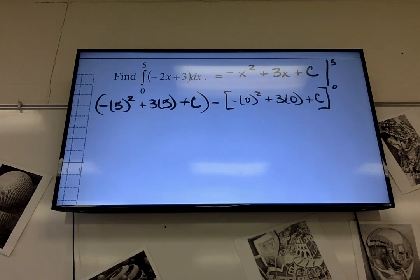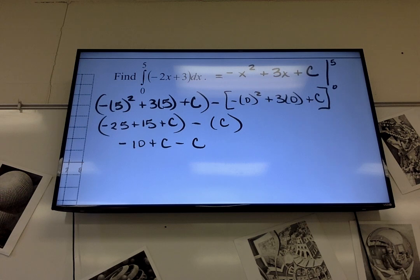So 5 squared is 25, so negative 25 plus 15 plus C, minus, yeah, 0 plus 0 plus C, so C. Are you cool with that? Okay, negative 25 plus 15 is negative 10 plus C, minus C. What happens to the Cs? Go away. They go away. And you get negative 10 for your answer.